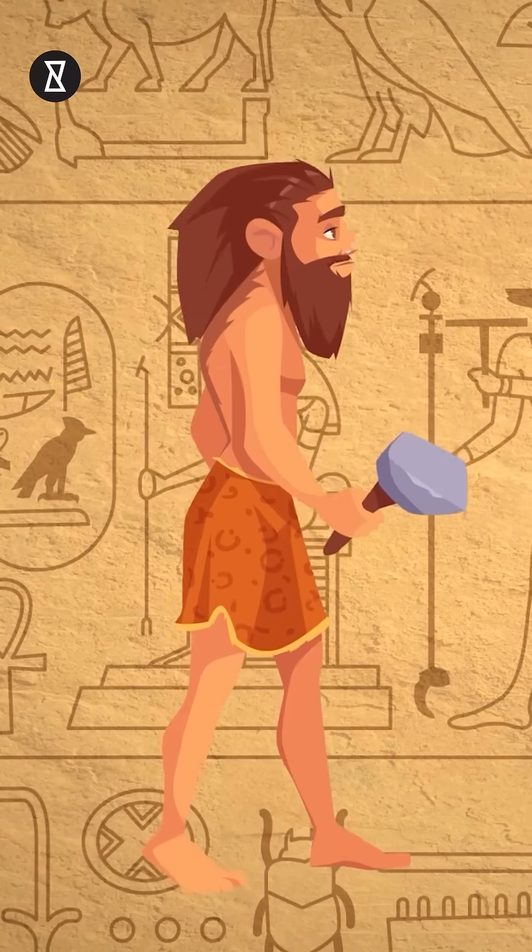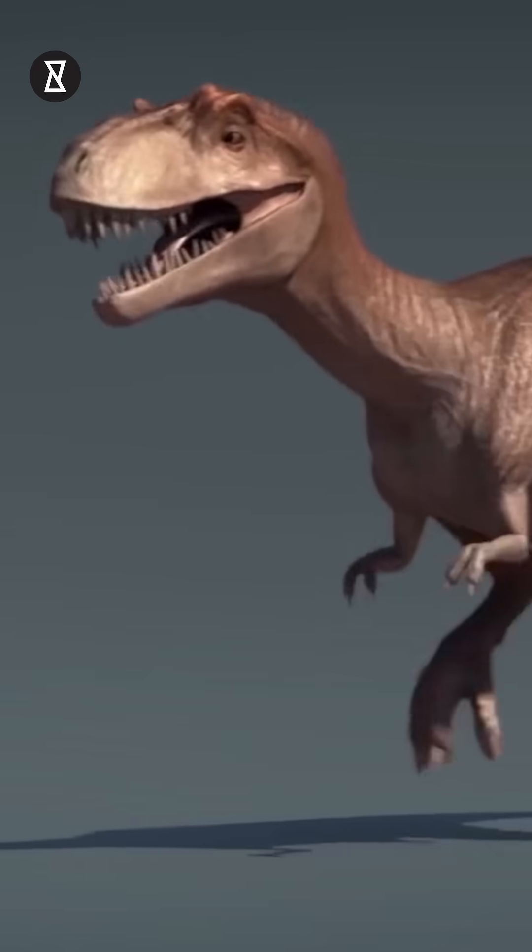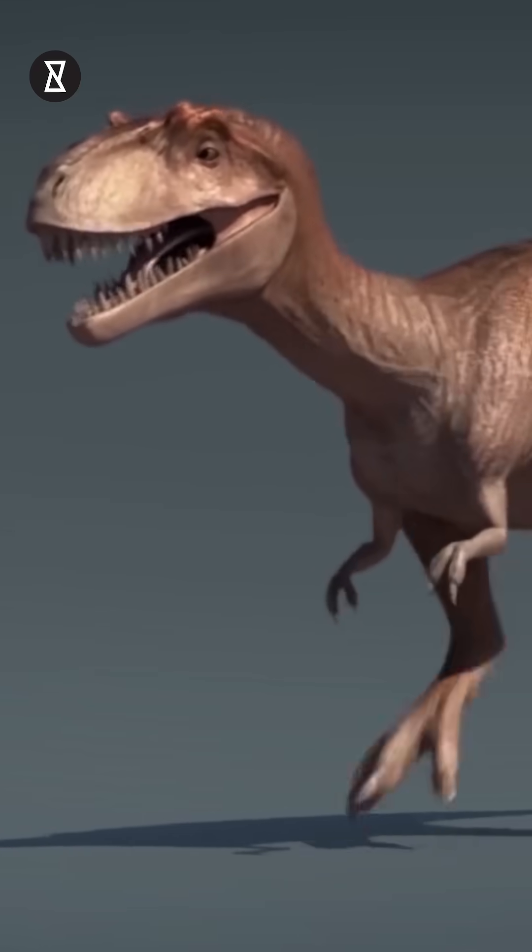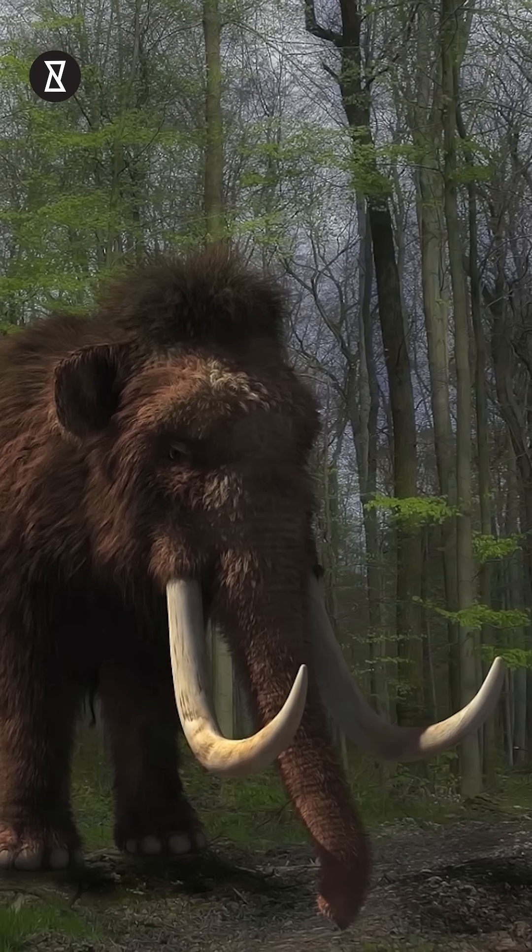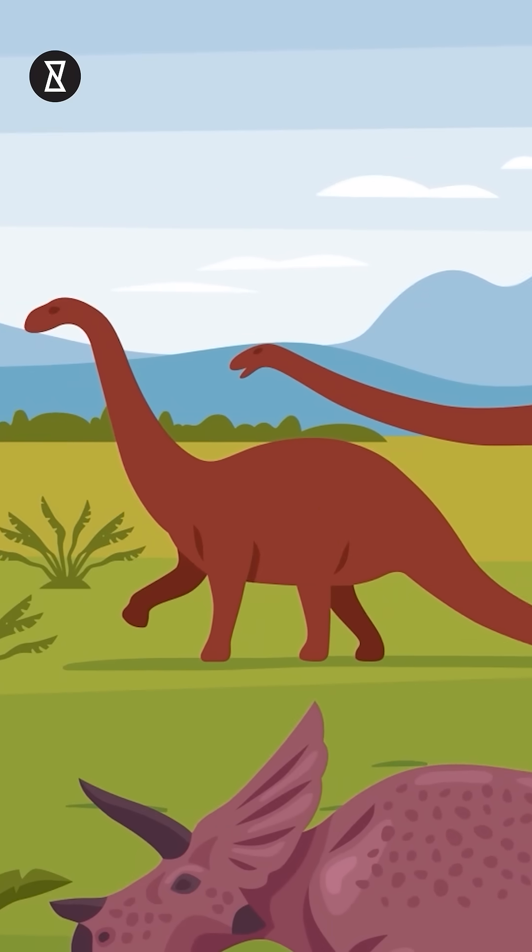Where are all the mammoths? Millions of years ago dinosaurs roamed the Earth. Even as recently as 10,000 years ago, woolly mammoths were around in the days of early man. But why don't we have any huge mammals anymore?